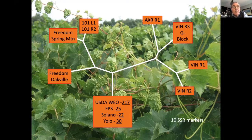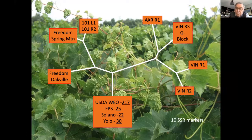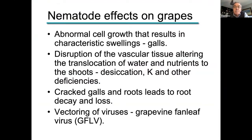Surprisingly this year, the phylloxera didn't show up until virtually the end of summer, which was very unusual. We thought they were gone and that we'd done something to limit the population, but it'll be interesting to see what happens next year — whether there's some climatic change or some incident that allows these to flourish or not.